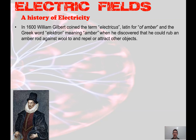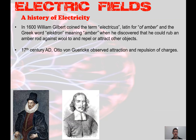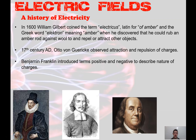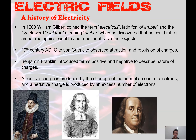In this section we'll be looking at electric fields. Firstly, a bit of history about electricity: in 1600, William Gilbert coined the term 'electricus,' which was Latin for amber, and the Greek word 'electron' also meant amber. He discovered that rubbing an amber rod against a piece of wool would repel or attract other objects. They didn't know this was generating static electricity at the time, but he coined the term based on that amber.